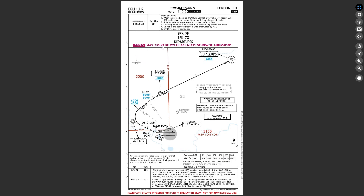Speed: max 250 knots below flight level 100 unless otherwise instructed. The route shows us that we'll be taking off from runway 27 right on the Brookmans Park Foxtrot chart. We're going to be climbing up towards the Burnham NDB, then starting a right turn, climbing between 4,000 feet but not above 6,000 feet, continuing towards the Chilton NDB above 5,000 feet but not above 6,000 feet, and then continuing heading 064 to the Brookmans Park VOR at 6,000 feet.